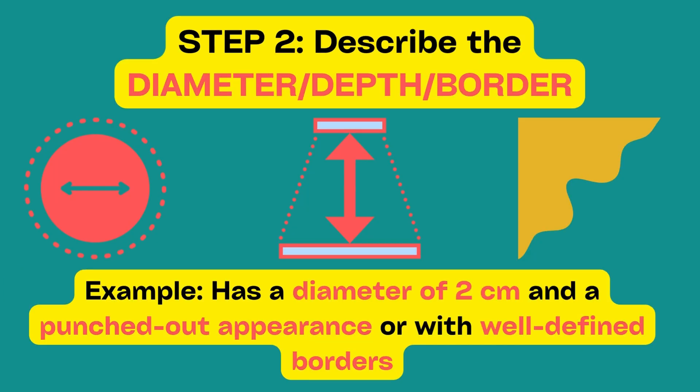The next thing you would comment on is the diameter of the ulcer and the depth. Bear in mind, the diameter and depth need not be accurate — the examiner is not looking for accuracy of the measurement; he is looking to see if you can roughly comment on the depth and the diameter. If you can't comment on the diameter, comment on the border. For example: it has a diameter of 2 cm and a punched-out appearance, or with well-defined borders.